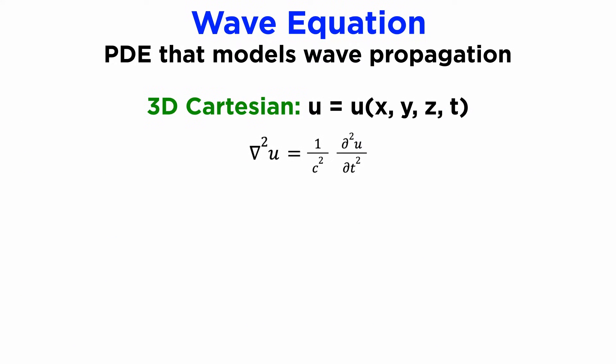The wave equation is a PDE that has the general form Laplacian of u equals 1 over c squared times the second partial derivative of u with respect to time. Recall that the Laplacian operator can be expressed as a sum of second partial derivatives with respect to position, which in 3D Cartesian coordinates are x, y, and z. So in the most general case, the wave equation is a PDE with four independent variables: x, y, z, and time t.